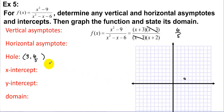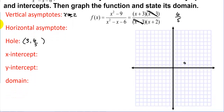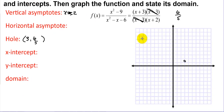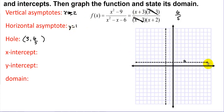After canceling the (x - 3) factors, we analyze the remaining function (x + 3) / (x + 2). The vertical asymptote is where the remaining denominator equals zero: x = -2. The horizontal asymptote is y = 1 because the degrees are equal and the leading coefficients are both 1.